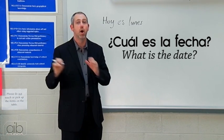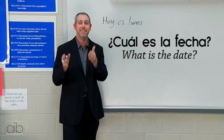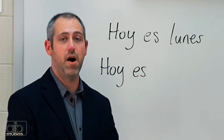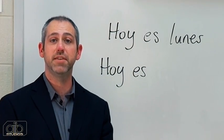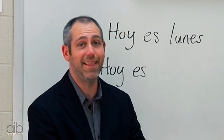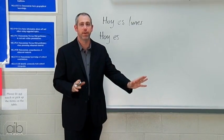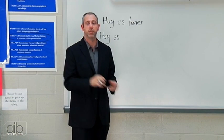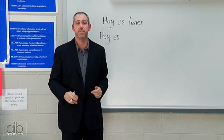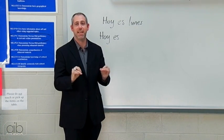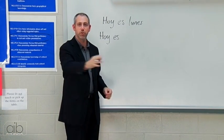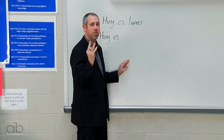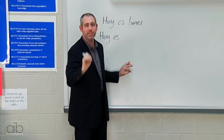When somebody says 'what day is today,' they say ¿Qué día es hoy? — what day is today? They want you to tell them the day. But if they say ¿Cuál es la fecha?, they're asking what is the date specifically. Here's how we do that: we say hoy es, and we follow a structure — first we say 'the' (el), then the number, then 'of' (de), then the month. For example, today is March 3rd — we say today is the three of March: hoy es el tres de marzo.